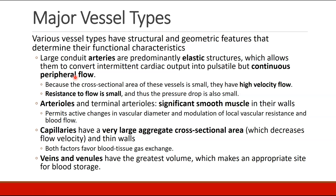The arterioles and terminal arterioles have very large amounts of smooth muscle in their walls. This allows the body to very actively change vascular diameter and local vascular resistance and blood flow, in order to preferentially send blood to the areas of the body where it's needed the most.